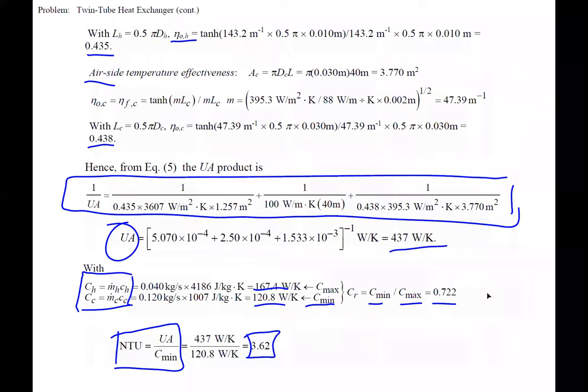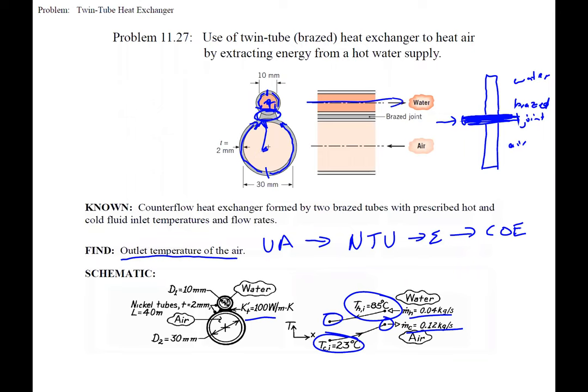With effectiveness now known, we use effectiveness = Q / Q_max. Q_max uses the minimum heat capacity rate, and Q comes from the COE on the cold side. The only unknown is the outlet temperature of the air, which we then solve for. As a double-check: with water flowing one way and air flowing the other, you can apply COE on the water side and COE on the air side — Q is the heat exchanged between them.